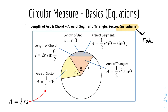Number one: the area of a sector. The formula is A = ½r²θ, where r is the radius and θ is the angle in radians. The area of a sector can also be rewritten as A = ½rs, where s is the arc length — we'll look into that shortly.